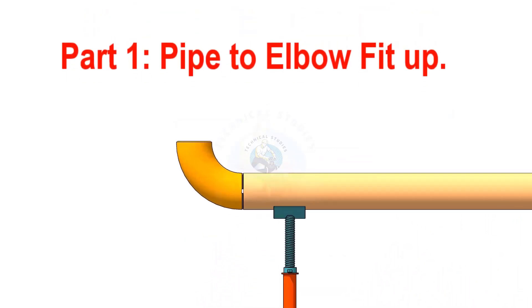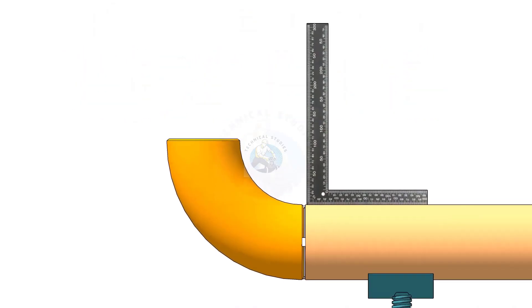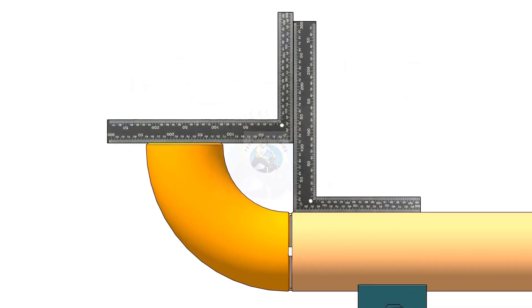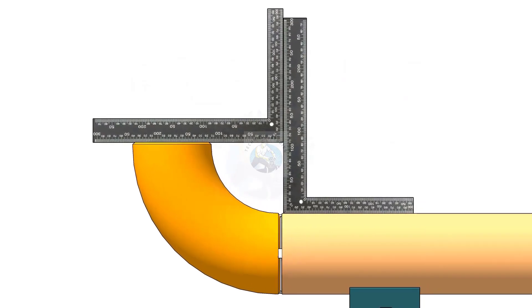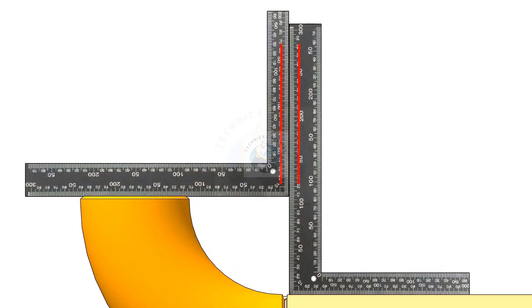There are different methods to check the fit up of an elbow to a pipe. One method is to hold right angles on the pipe and on the elbow, and check the gap. If the right angles are parallel, the fit up is correct.